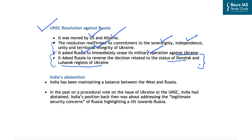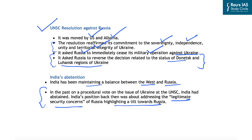Besides India, China also chose to abstain from voting. For a resolution to pass, all permanent members must either vote in favor or abstain — there should be no veto. Because Russia vetoed, the resolution could not be passed. India has been maintaining a balance between the West — the US-led countries — and Russia. In a previous procedural vote on Ukraine at the UNSC, India had also abstained. India's position at that time was about addressing Russia's legitimate security concerns, highlighting a tilt towards Russia, but in principle India abstained, reflecting neutrality at the international level.